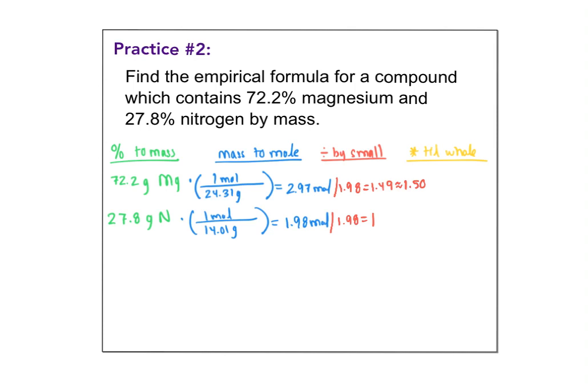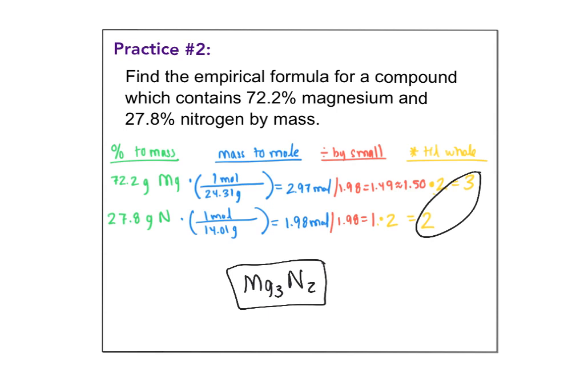So now we do the step we skipped last time: multiply till whole. I can't have a subscript of 1.50 for magnesium — I need whole numbers. I multiply by 2, giving me 3 for magnesium. I also multiply the nitrogen's 1 by 2, giving me 2. So I get Mg3N2 as my empirical formula.